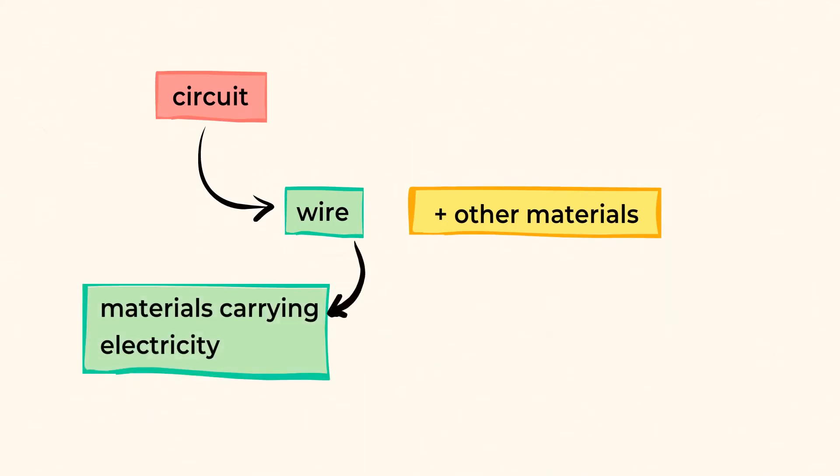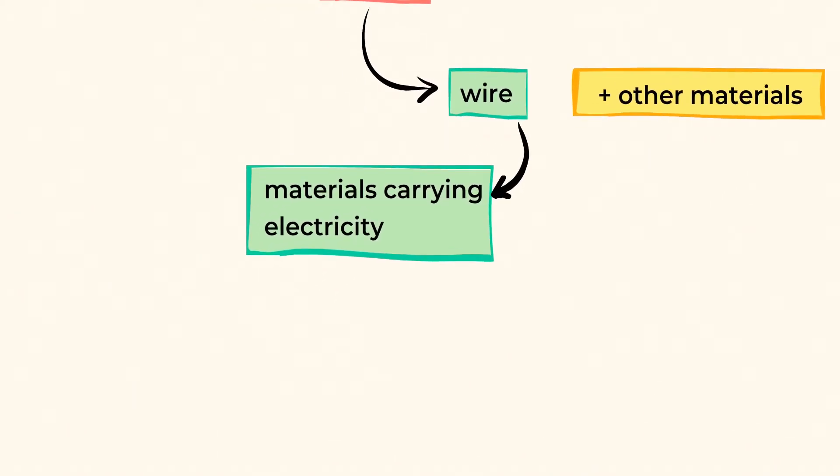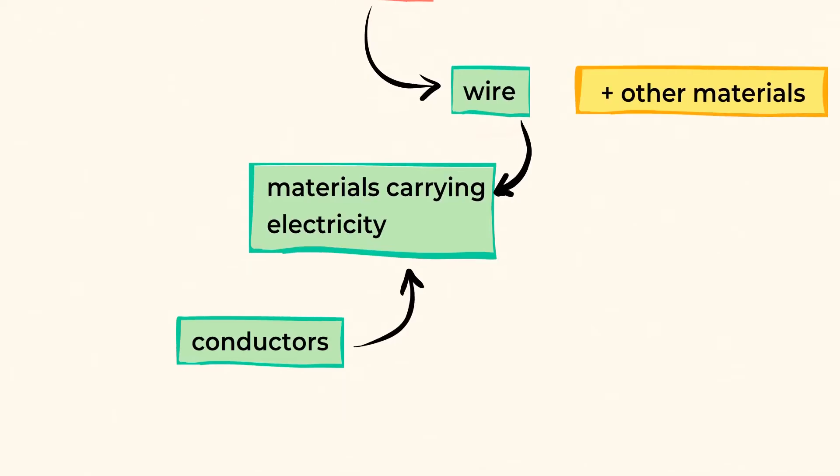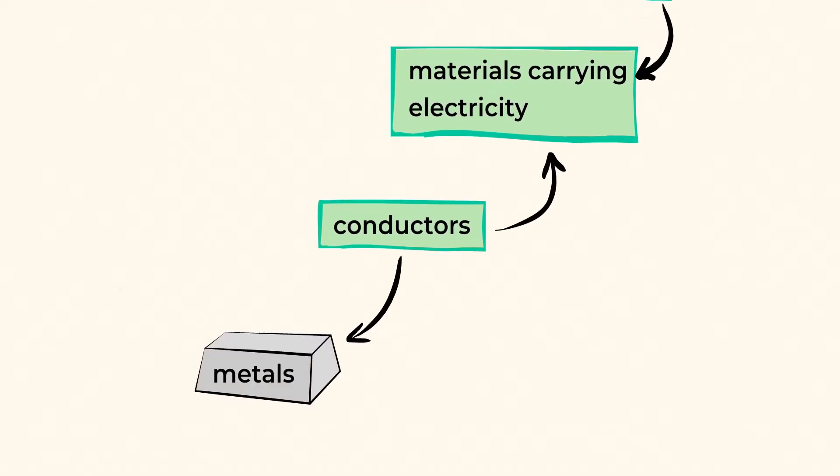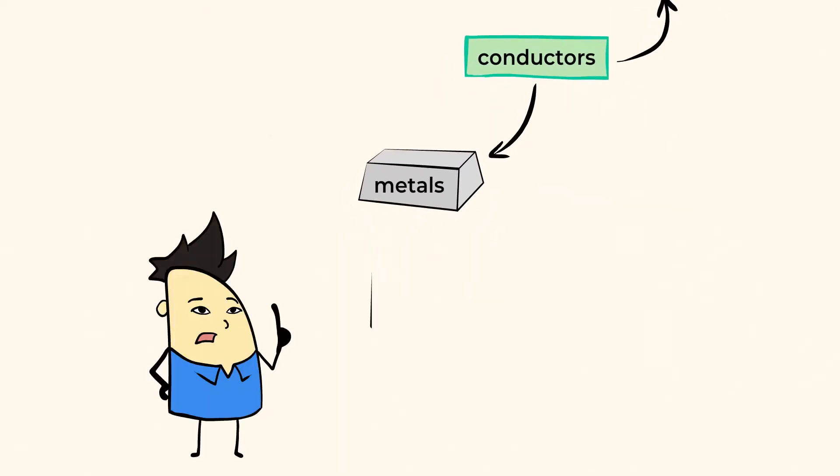Some materials can carry electricity better than others. We call those conductors. Metals are great electrical conductors, which is why you never want to stick a fork into an outlet. The metal fork will carry the electrical current, and it'll shock you.